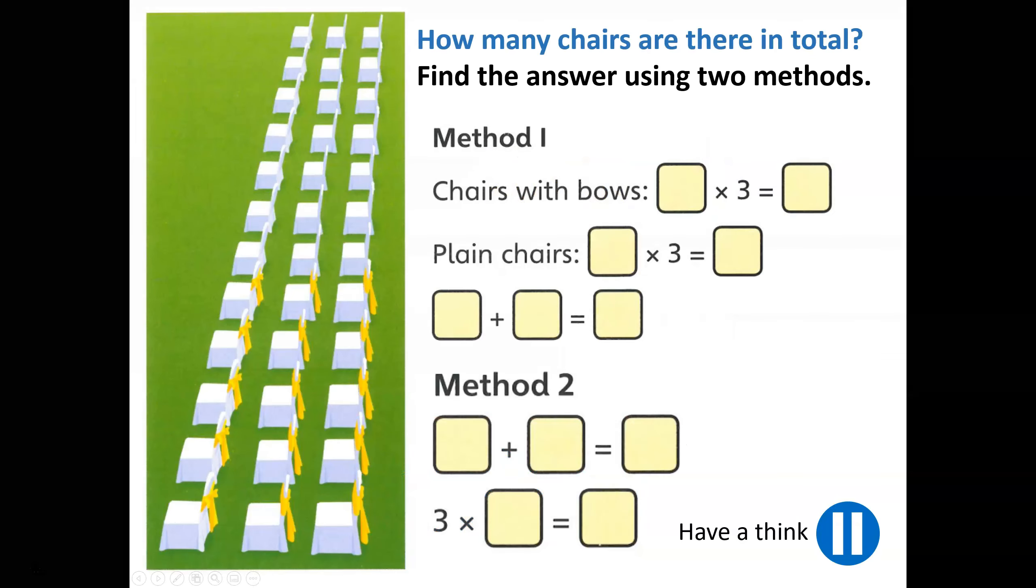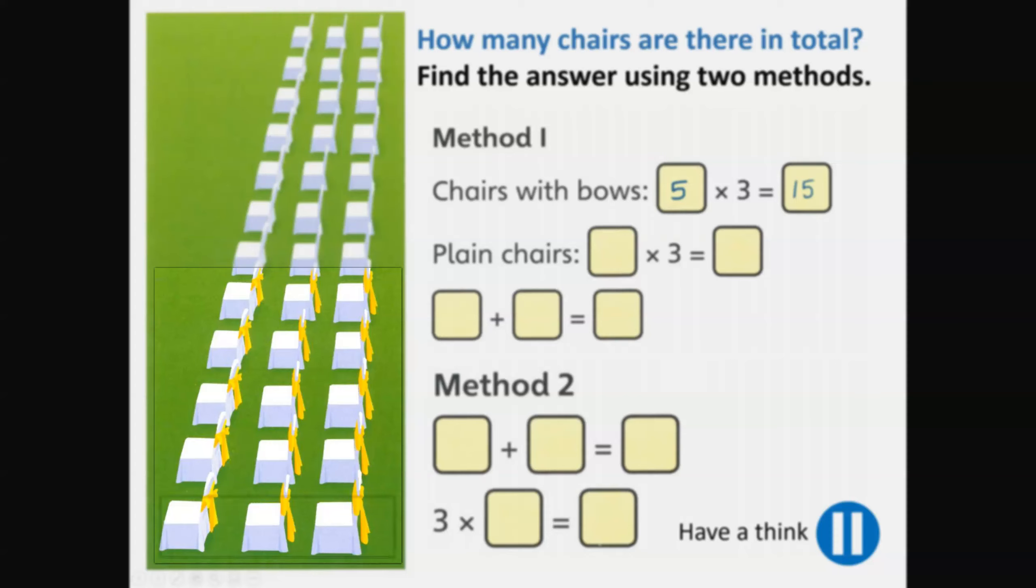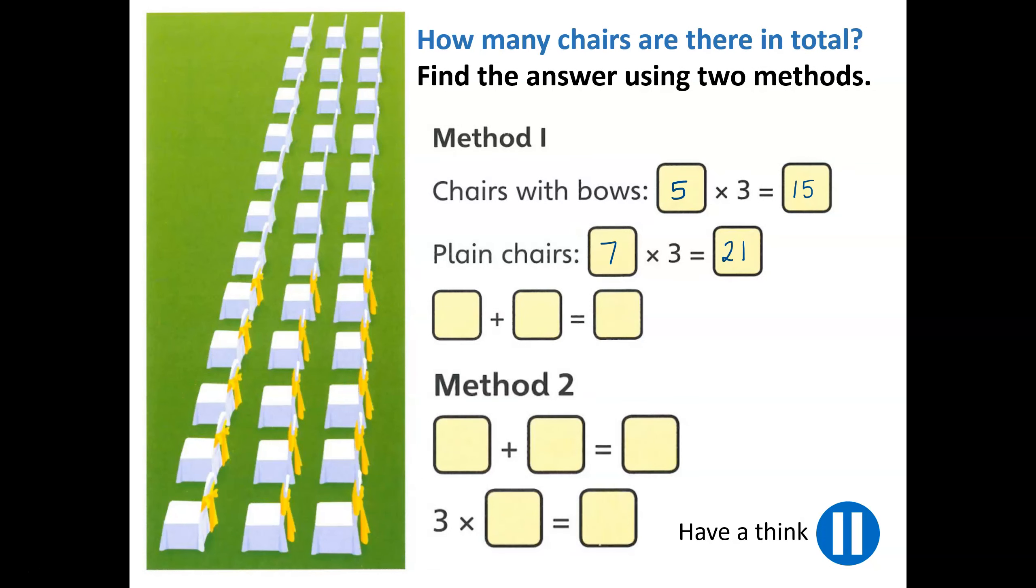Now it's your turn. I would like you to have a think about how you might solve this problem. Pause the video now and give it a go before coming back to see how well you got on. First of all, let's look at the chairs with bows. We can see that there are three chairs in each row and there are five rows, so 5 times 3 is equal to 15. We can calculate the total of plain chairs by 7 times 3 is equal to 21. If we add the two groups together we will solve the problem: 15 add 21 is equal to 36.